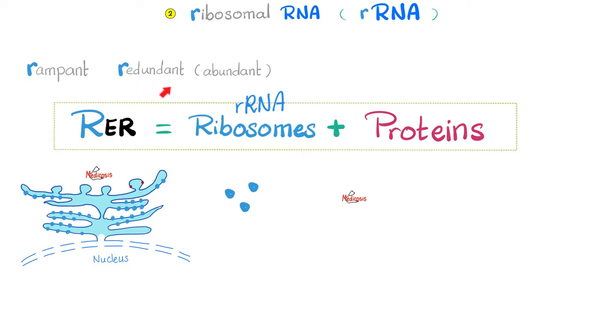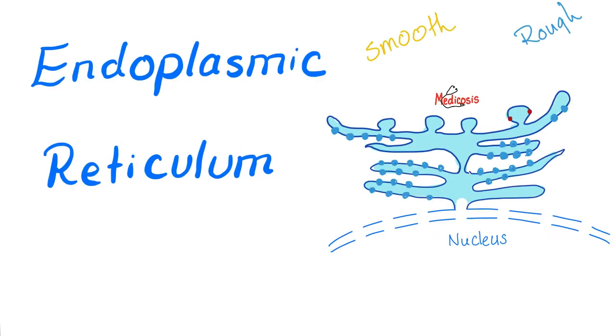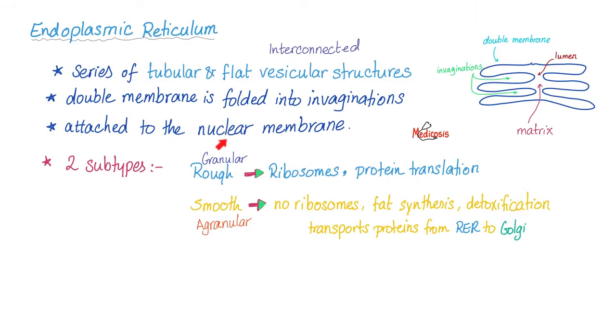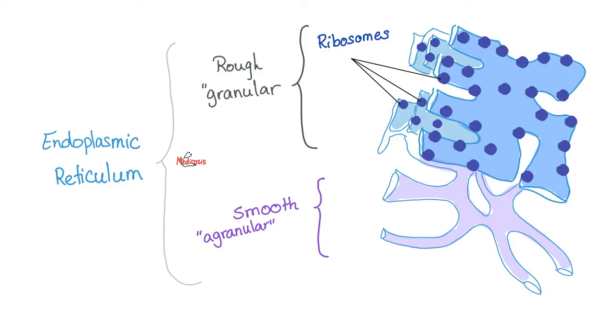Next, ribosomal RNA, the most abundant RNA type. Never ever forget this Medicosis equation. The rough endoplasmic reticulum equals ribosomes plus proteins. What does the ribosome have? Ribosomal RNA. If you want to learn more about the endoplasmic reticulum, check out the video titled Endoplasmic reticulum in my biology playlist. Endoplasmic reticulum could be rough or smooth. Rough is for translation, which means protein synthesis. Why is the rough rough? Because it's ribosomes. The ribosomes is giving it its granular shape. Function of the rough endoplasmic reticulum is protein synthesis or translation of mRNA into proteins. This is the rough endoplasmic reticulum, which has ribosomes, which have rRNA, and this is the smooth endoplasmic reticulum. No ribosomes and no rRNA.